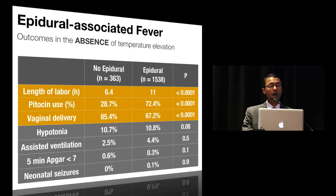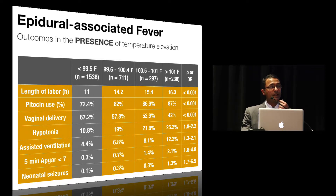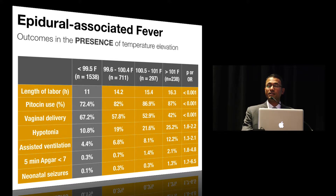Despite a longer labor and higher rate of Pitocin use in the epidural group, there were no significant differences in adverse neonatal outcomes in the absence of fever. But when outcomes were assessed in the presence of temperature elevation, there was a clear linear dose-response relationship between fever and adverse neonatal outcomes. The incidence of hypotonia, assisted ventilation, low APGAR scores, and neonatal seizures was highest in the group that developed fever greater than 101°F. However, that same group also had the longest labor and the highest rate of Pitocin use. The study establishes that elevated maternal temperature is associated with adverse neonatal outcomes, but does not prove a causal association between epidural analgesia and maternal fever.